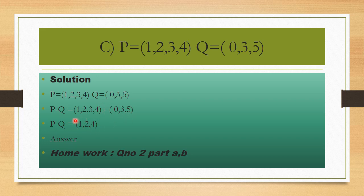For Q minus P, we write Q and subtract P elements. 0 is in Q, not in P, so we write 0. 3 is in both sets. 5 is in Q, not in P, so we write 5. This is our answer.